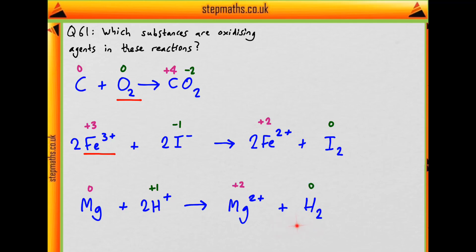So where's the oxidising agent? The magnesium has been oxidised from 0 to +2 by losing 2 electrons. So the hydrogen ion must be the oxidising agent.